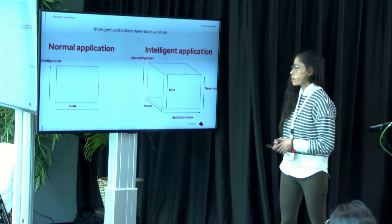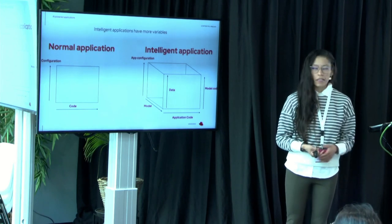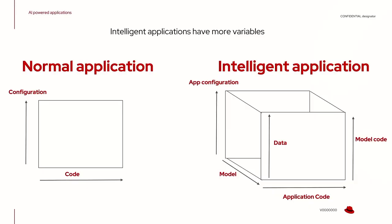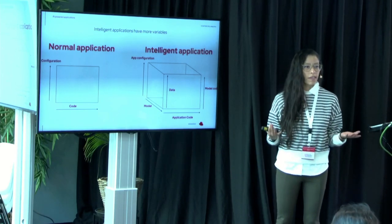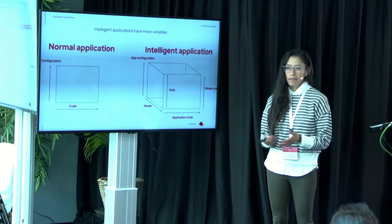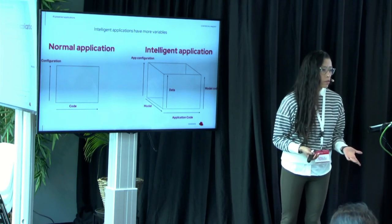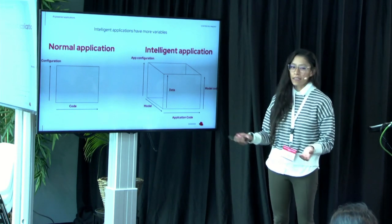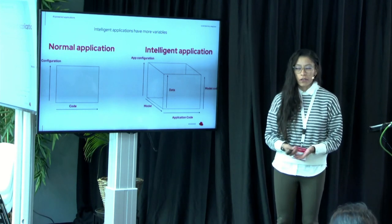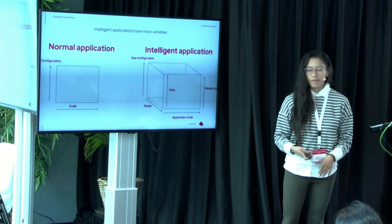The application is also more complicated than a regular one. With a regular application, you just manage the code and configuration. With an intelligent application, you have the model code, the versioned model itself, the data, the application configuration, and the application code. So when something changes or breaks, how do you know which variable caused it? Was it a change in the model, data drift, or a change in the app code? It gets multidimensional.